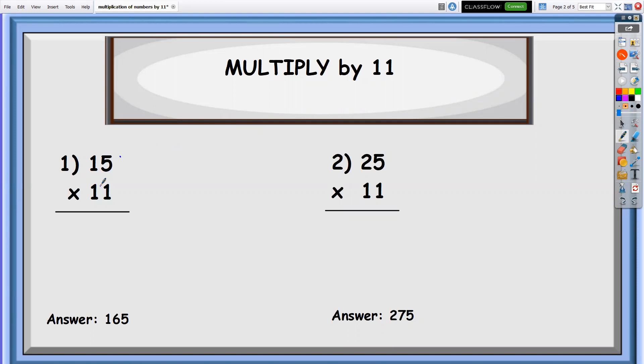We will see first the steps on how to do that. First, we're going to multiply the last digits. So five times one, that is five. And then we're going to add these two digits. So one plus five, that is six.